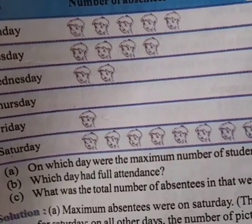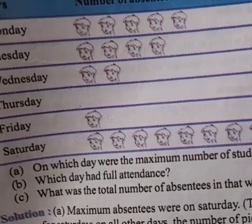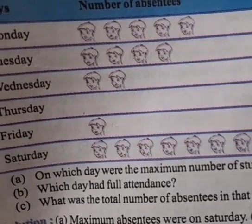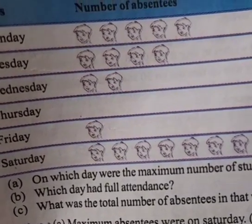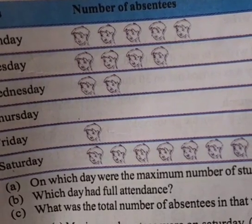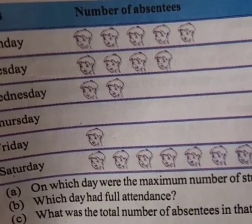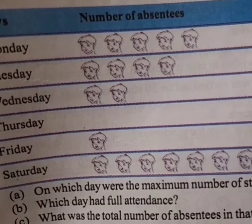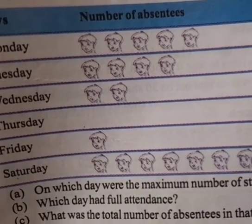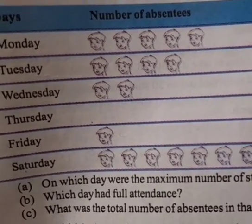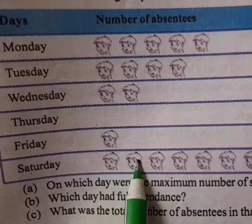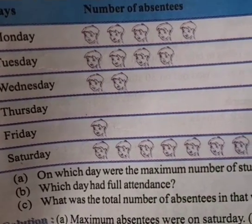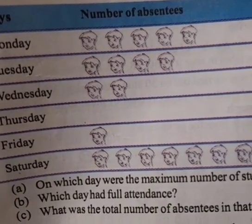On Saturday, there are 8 students absent. Now answer the following questions. First: on which day were the maximum number of students absent? Obviously, Saturday — with 8 students absent. Second: which day had full attendance? Thursday — no students were absent.